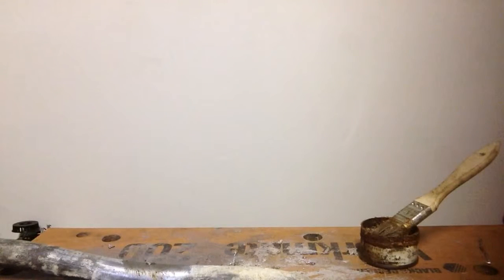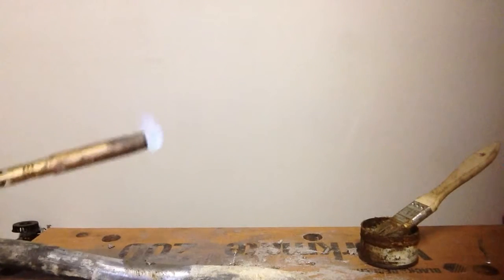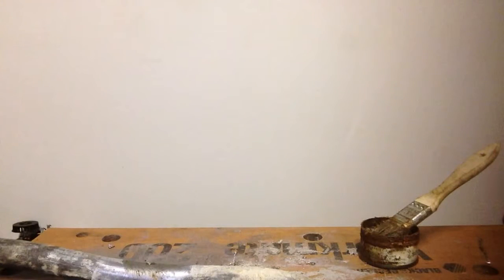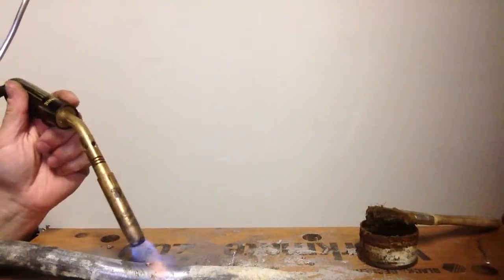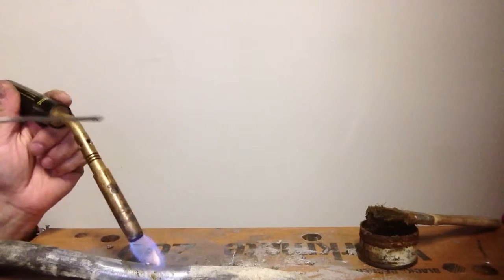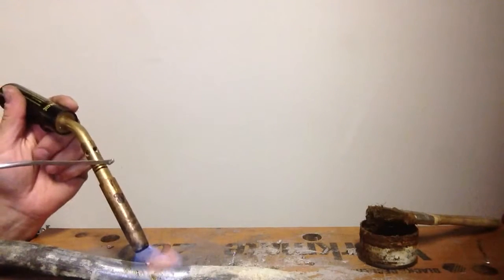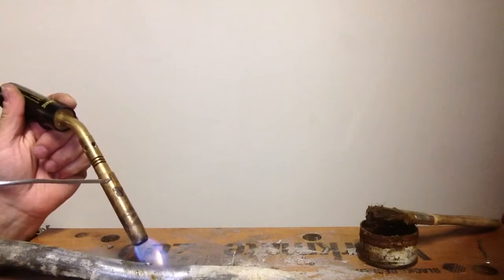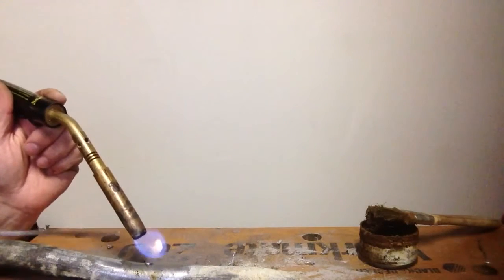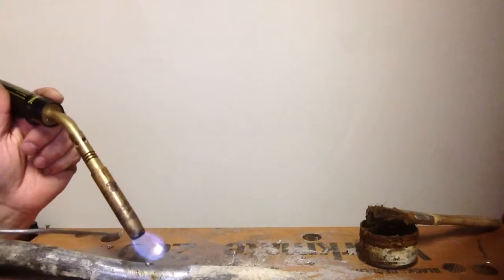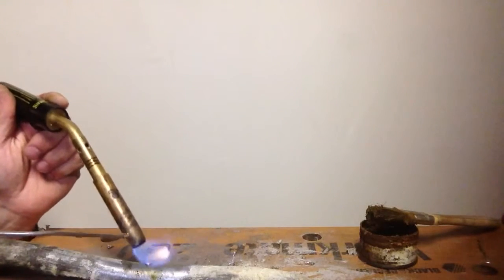So we're going to go ahead and start heating this up. And it seems that I collapse the pipe at this point, but we'll go ahead and just keep on heating until we can fill this hole up. Another way to do this is you can drill that out and tap a brass plug in there and solder that in.